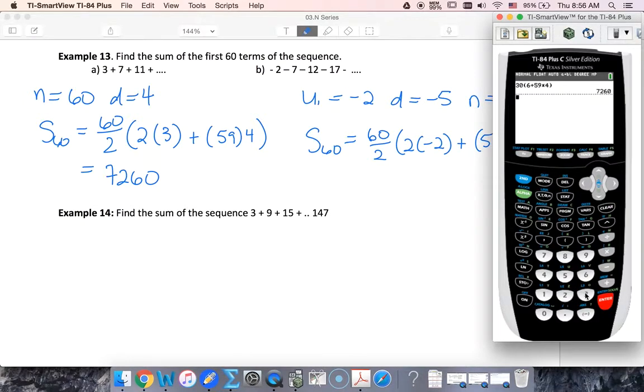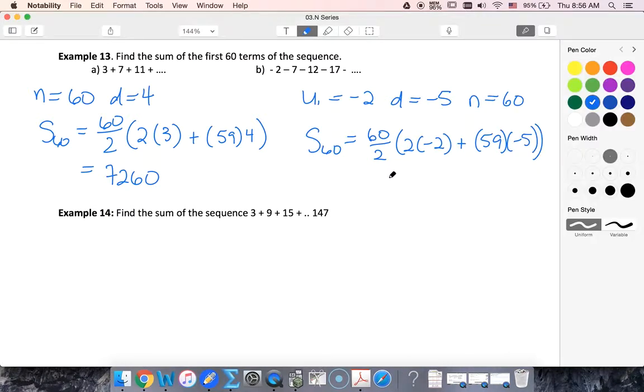30 times negative 4 plus 5 times negative 4. Oh no, sorry, 59 times negative 5. This gives us negative 8,970.